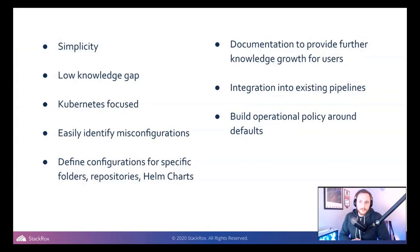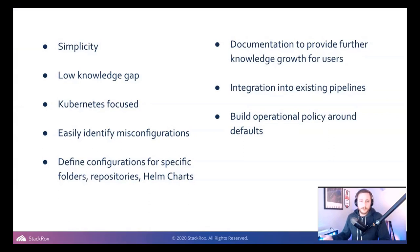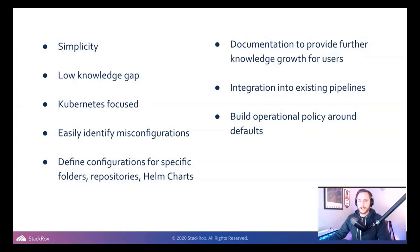KubeLinter is there to identify misconfigurations as close to the source as possible, enabling developers and CI pipelines to catch issues early in a declarative way. The checks also provide knowledge for further growth — not only are we linting the files, but we're showing you why the policy was created, with documentation so you can go into Kubernetes docs and find out more. The end goal is that you can build operational policy within your organizations or teams, implemented on a personal level, across a team, or across an organization.